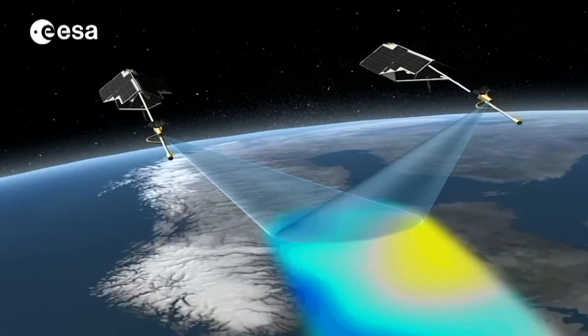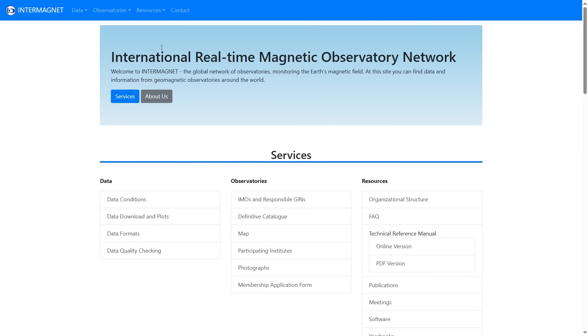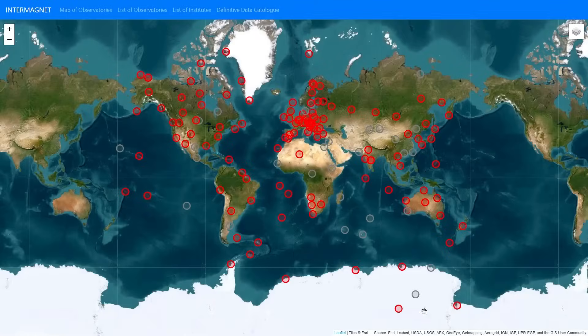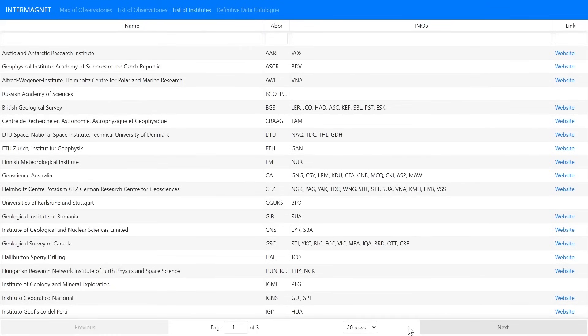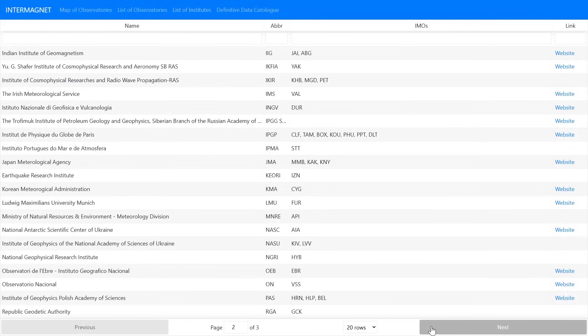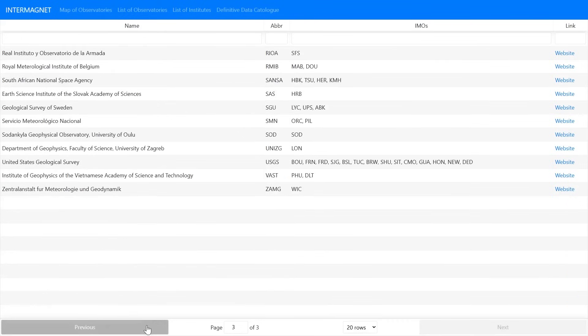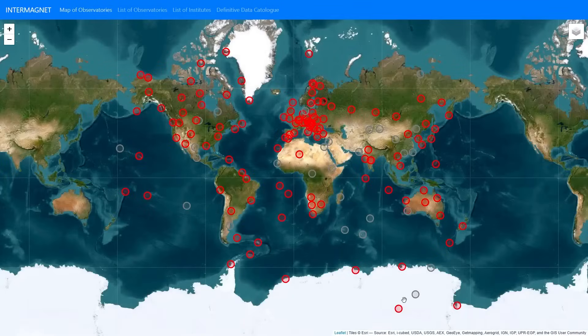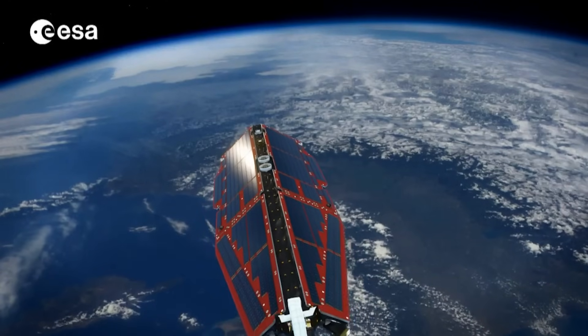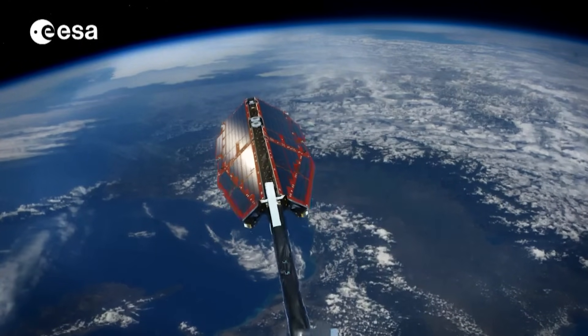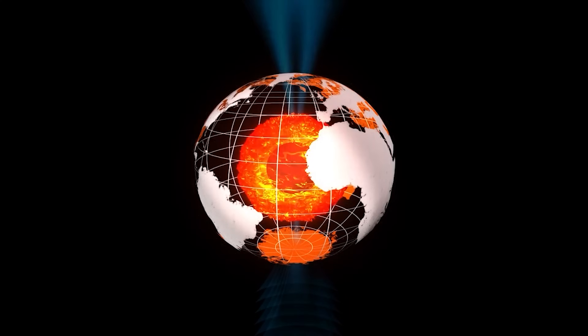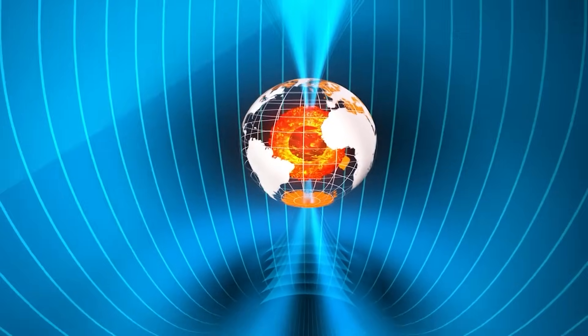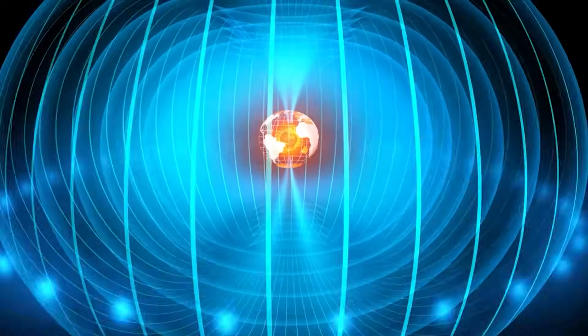And we know this is 100% the case because we have a widespread network of independent magnetic observatories spread out across the entire world run by a variety of organizations and universities. You can see all this data on intermagnet and examining that data, there was never a sudden 10 times weakening of Earth's magnetic field observed right around 2014. Instead, that corresponded perfectly with the launch of swarm, which is measuring the magnetic field out in space, not at the surface. And so they just had to get used to the new measurements that they were working with.